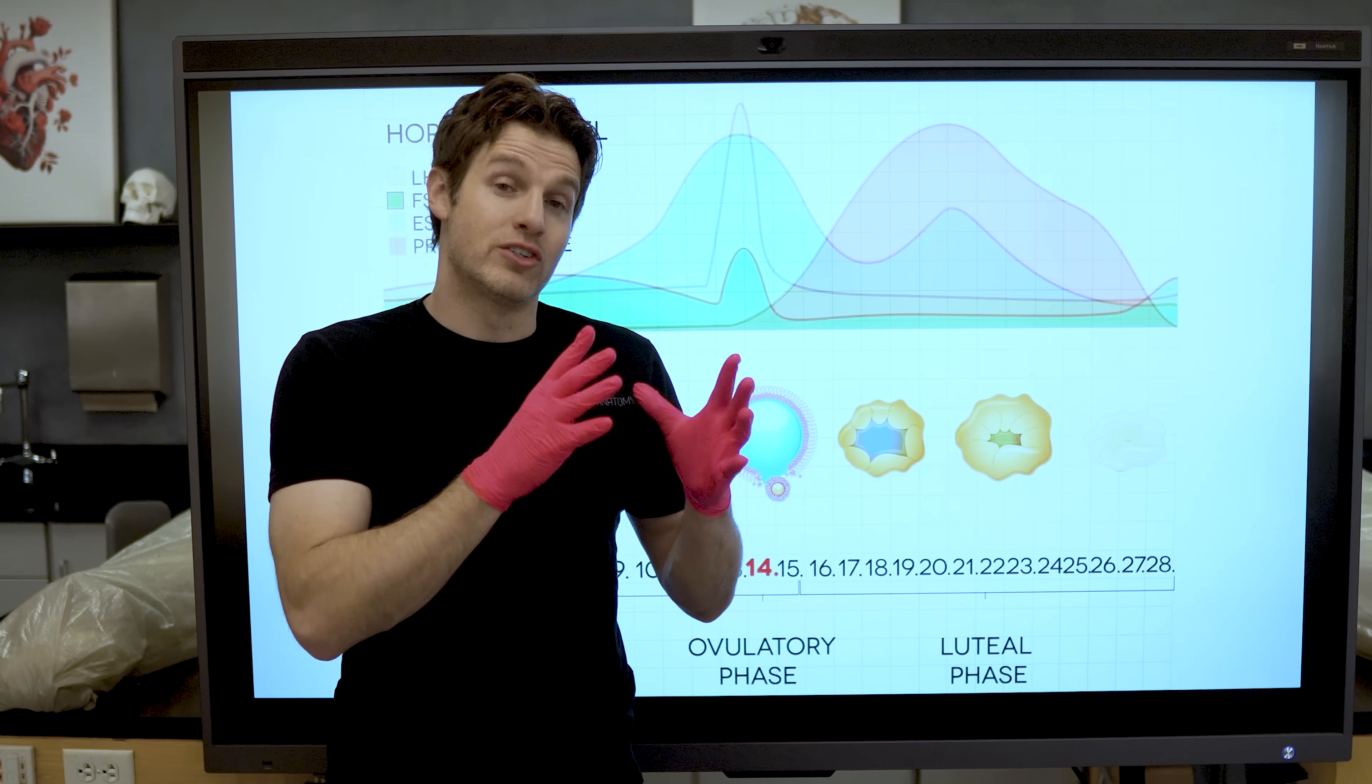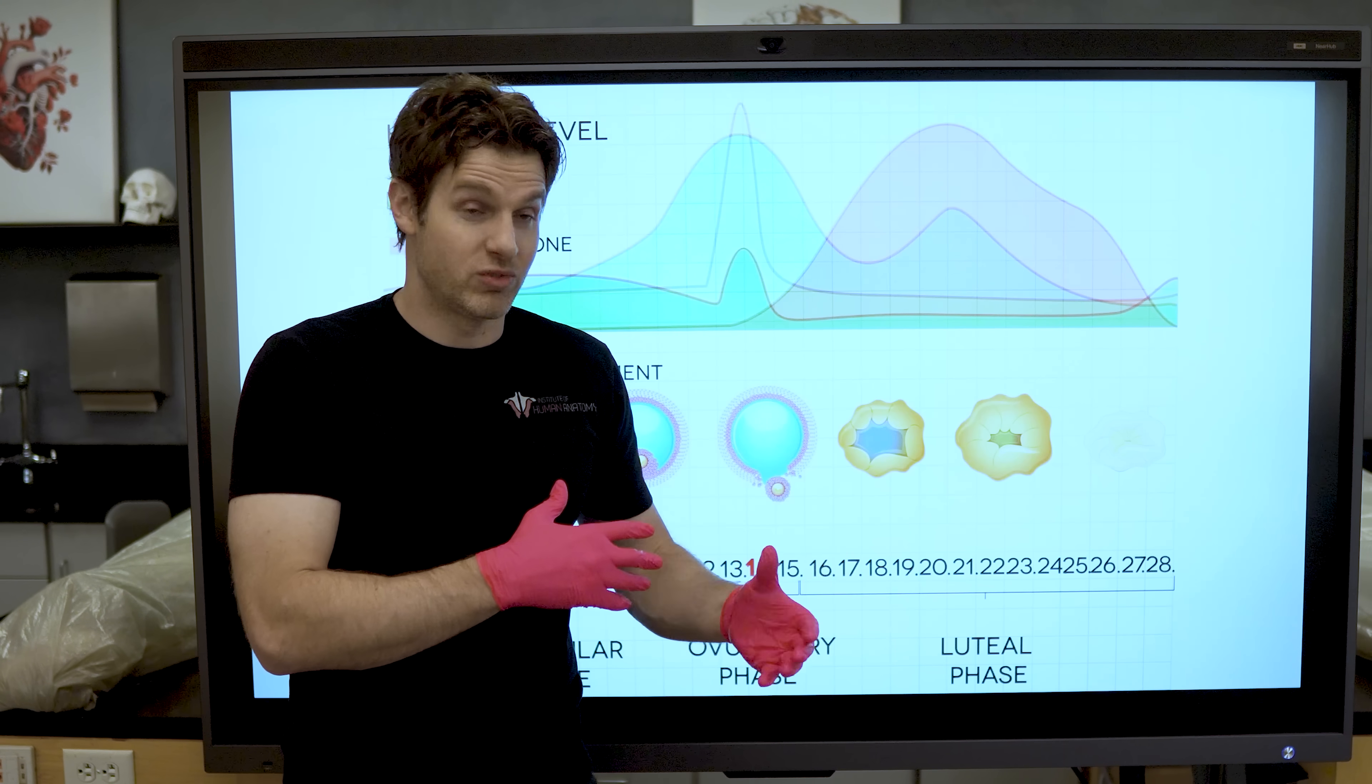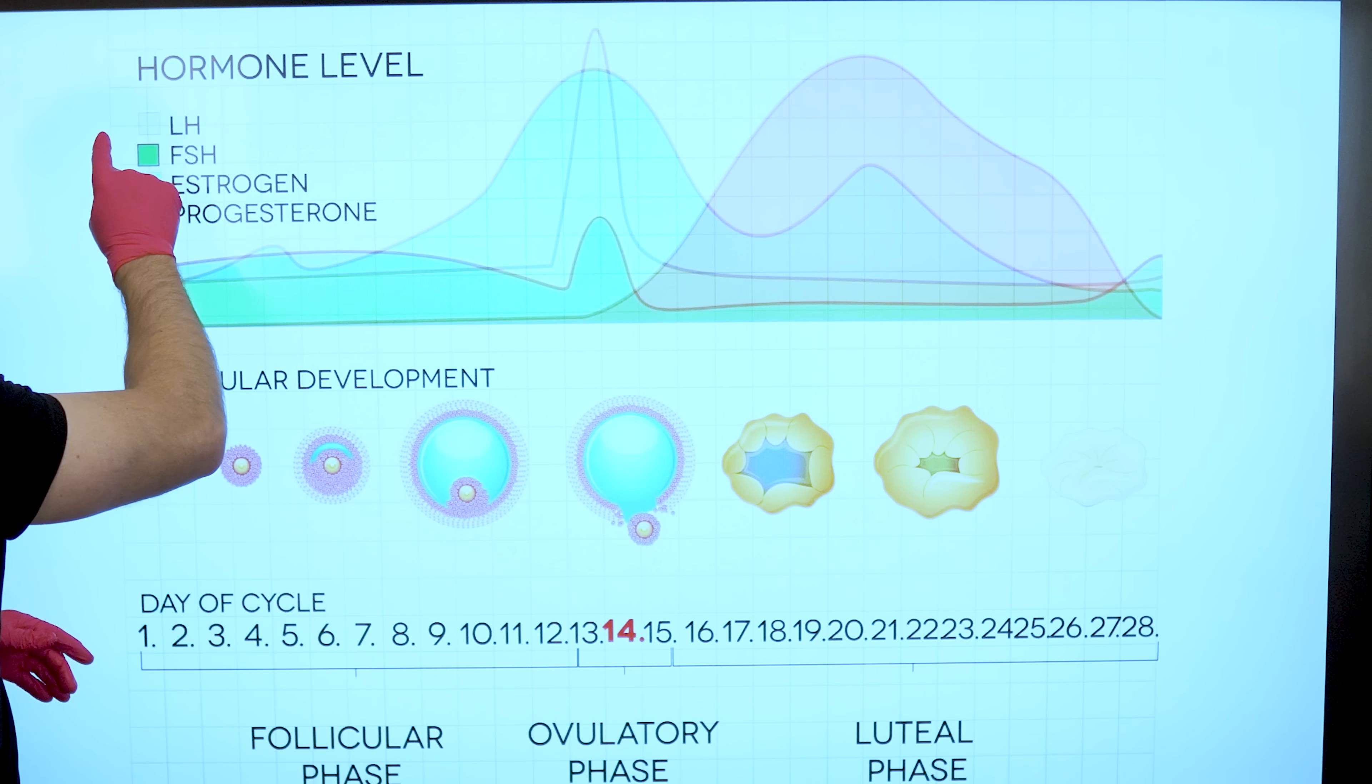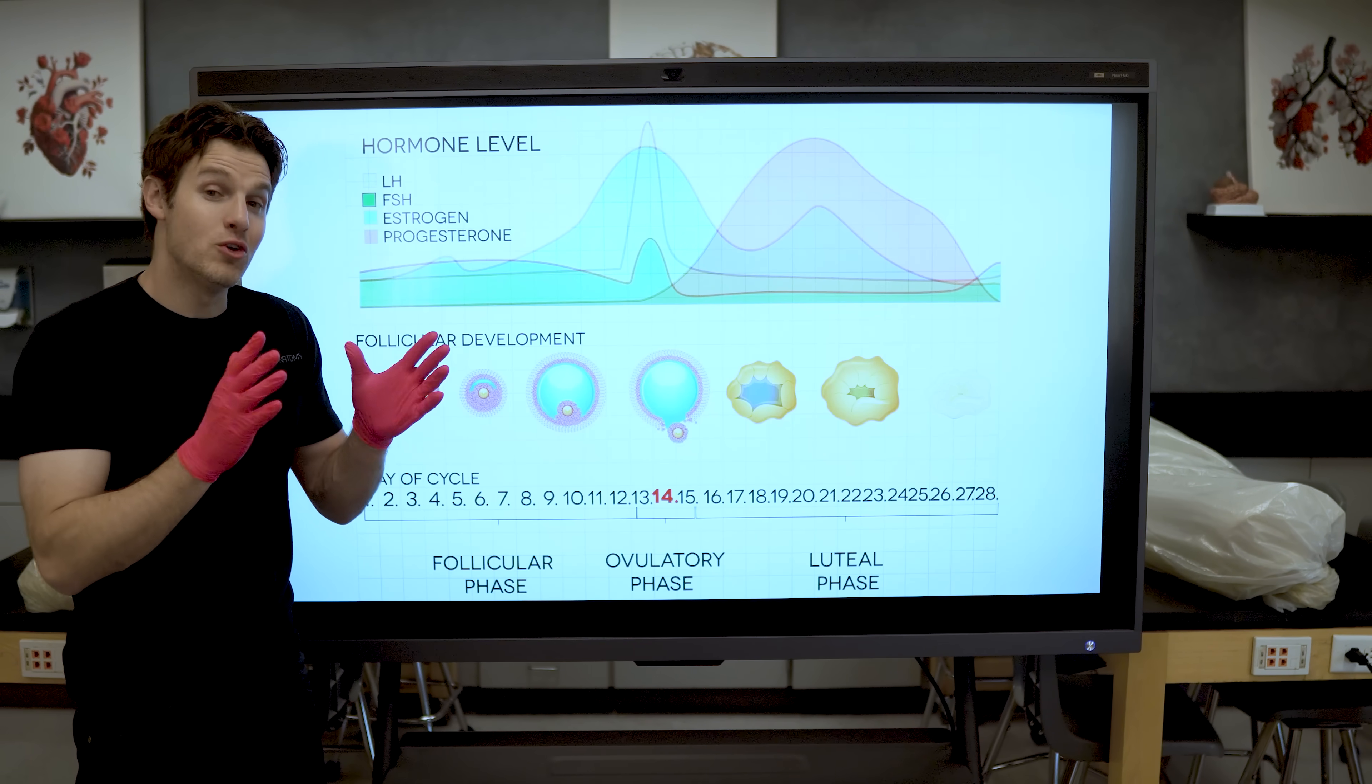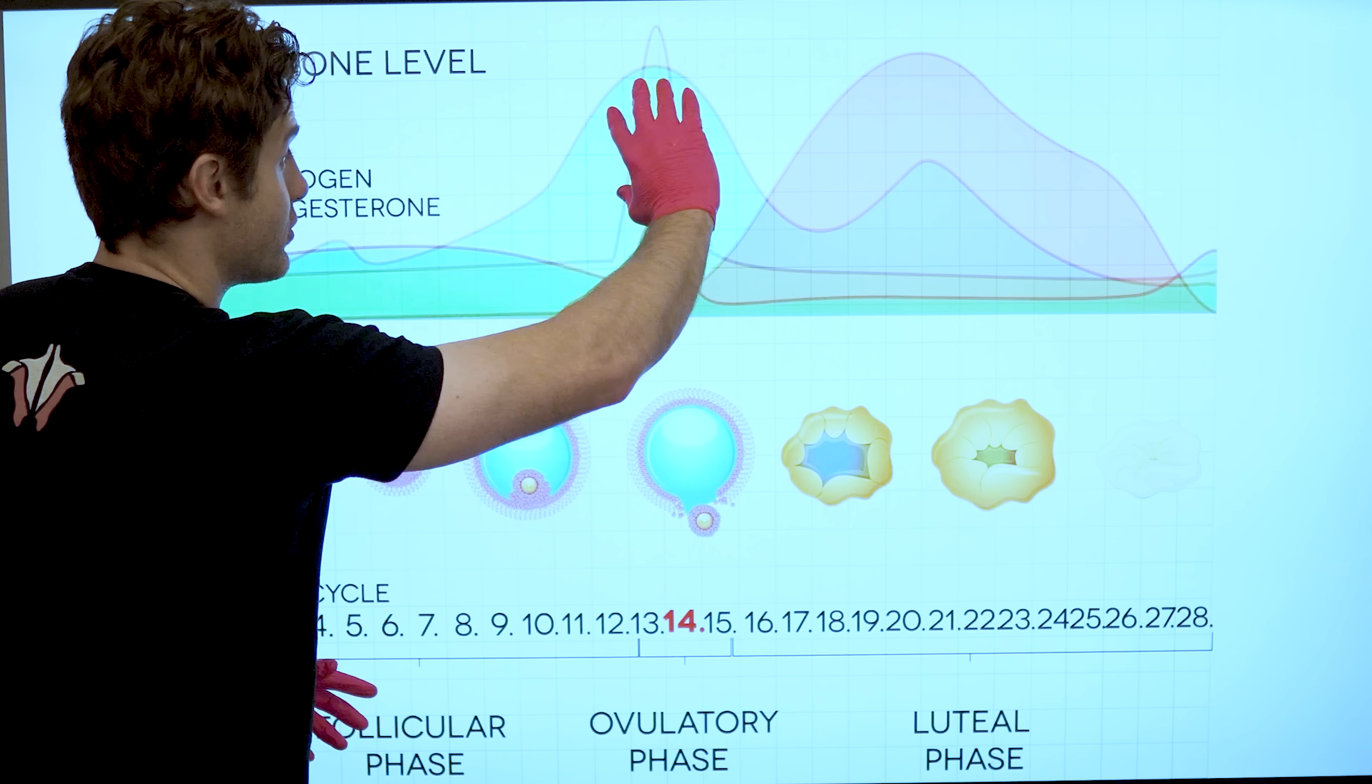And what happens is even though there's 6 to 12 follicles developing, typically only one of those follicles fully develops and they refer to that as the dominant follicle. And that dominant follicle is the one that actually takes over. That yellow structure inside is the actual egg or ovum. And on day 14, the luteinizing hormone spikes and that triggers the release of the egg that we call ovulation. Sometimes people will have one or two dominant follicles and both will ovulate and that's where paternal or non-identical twins develop. Most of the time, a female will release only one egg.